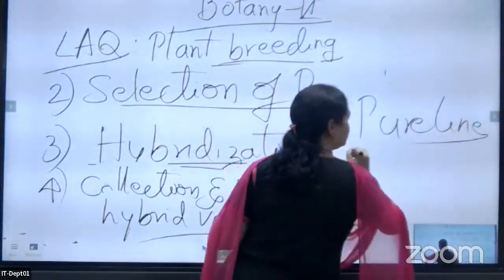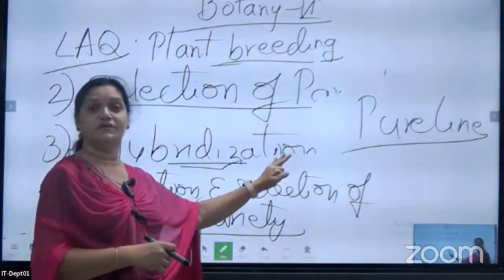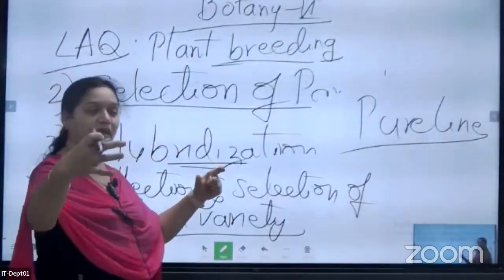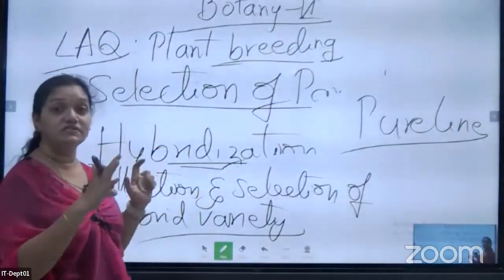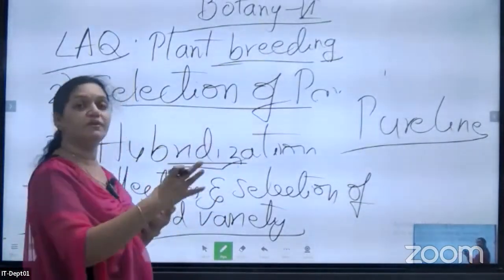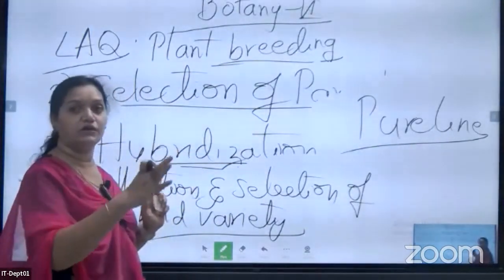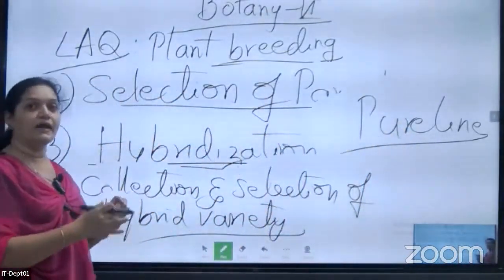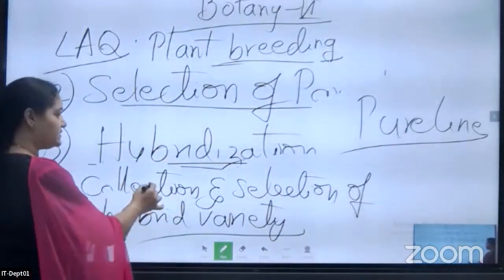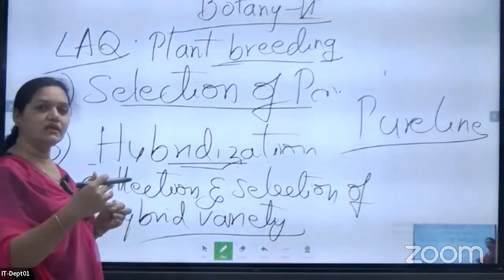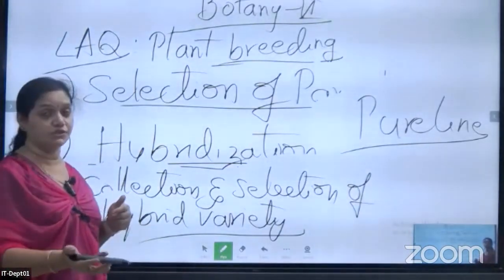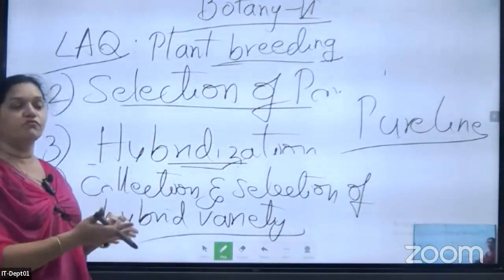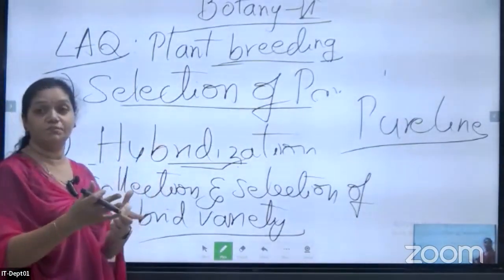Remember the term 'pure line selection' — underline this word. Pure line selection means collecting seeds from suitable plants growing fast in the soil in a systematic order. Those seeds are kept for further growth. We have to observe the plants for six to seven generations so that all desired qualities are present in the plant body — all the qualities expected through the hybridization process.